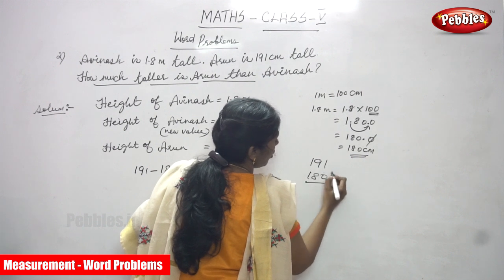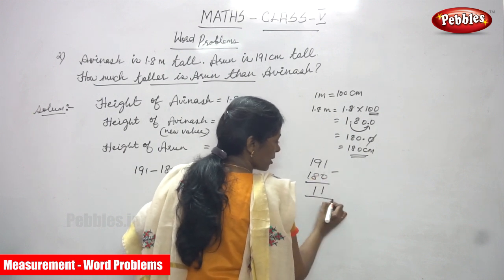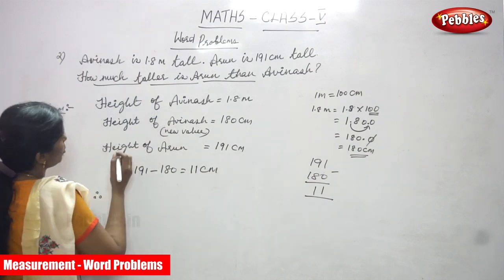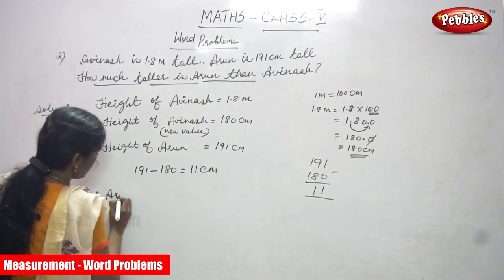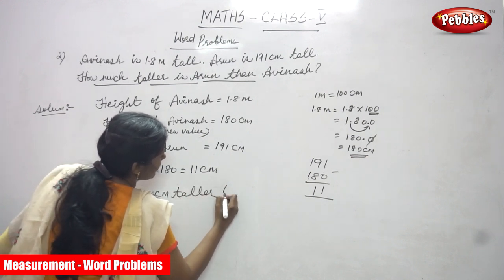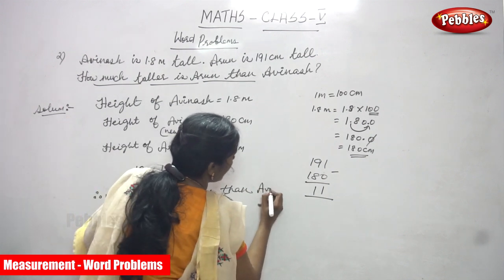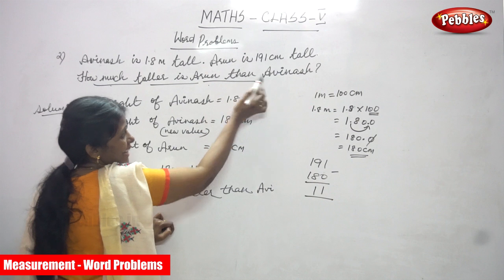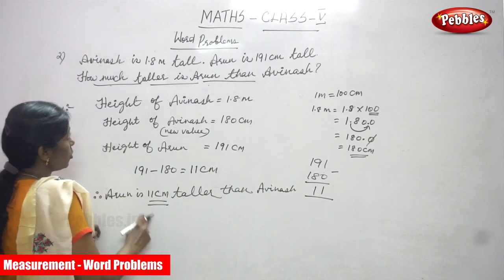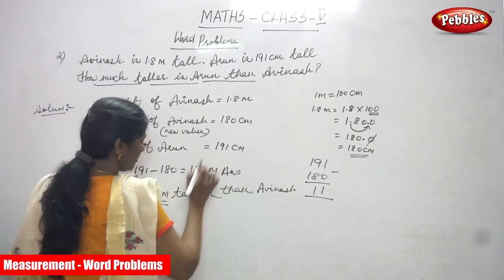191 minus 180: 1 minus 0 is 1, 9 minus 8 is 1, 1 minus 1 is 0. That is 11 centimeters. Therefore, Arun is 11 centimeters taller than Avinash. The question is: how much taller is Arun than Avinash? The answer is 11 centimeters. Arun is 11 centimeters taller than Avinash. This is the right answer for the question.